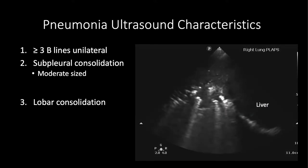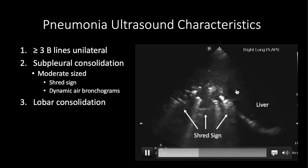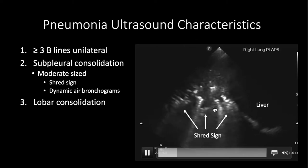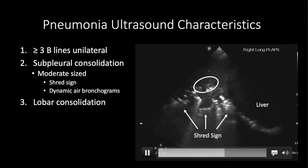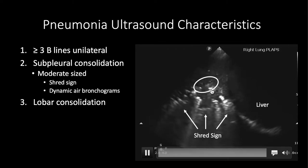Here's a larger subpleural consolidation where pus is increasing in the lung. You can see what's called a shred sign — an irregular border of the pleural consolidation, like the lung has been shredded because it's filled with pus. You also see dynamic air bronchograms: as the patient breathes in and out, you can see air movement in the lung as white hyperechoic spots that move with respiration. This further increases the likelihood you're looking at pneumonia.